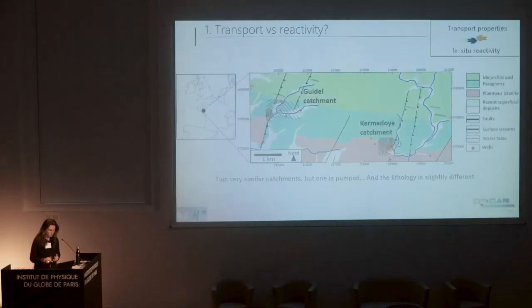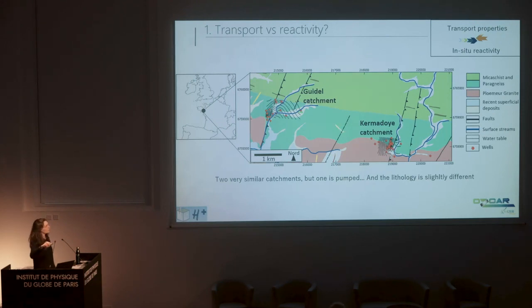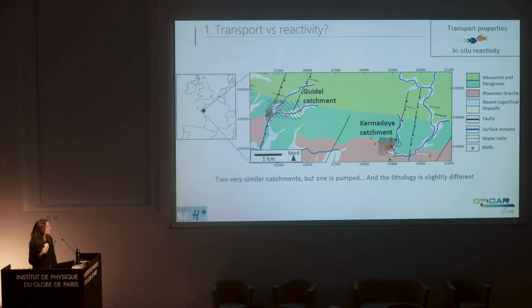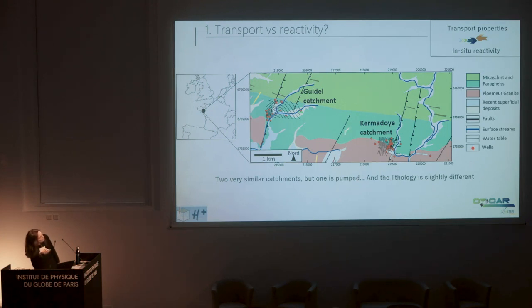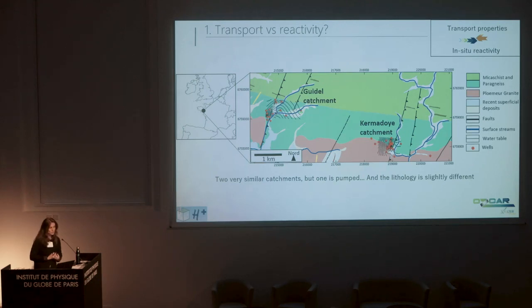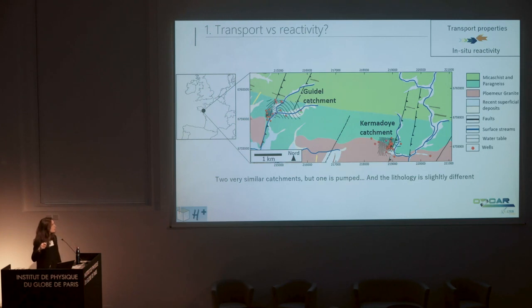For the first study, studying transport and reactivity, we decided to go to two very similar catchments: the Guidel and the Kermadoua catchments. Both are located near the southern shore of Brittany, they are very similar — about five kilometers apart, similar in size. The only small differences between these two catchments are that one is pumped, and there is a slight difference in lithology because one is only on schist while the other also has granite. The question was: are these two sites similar, or is there any difference in the geochemistry?